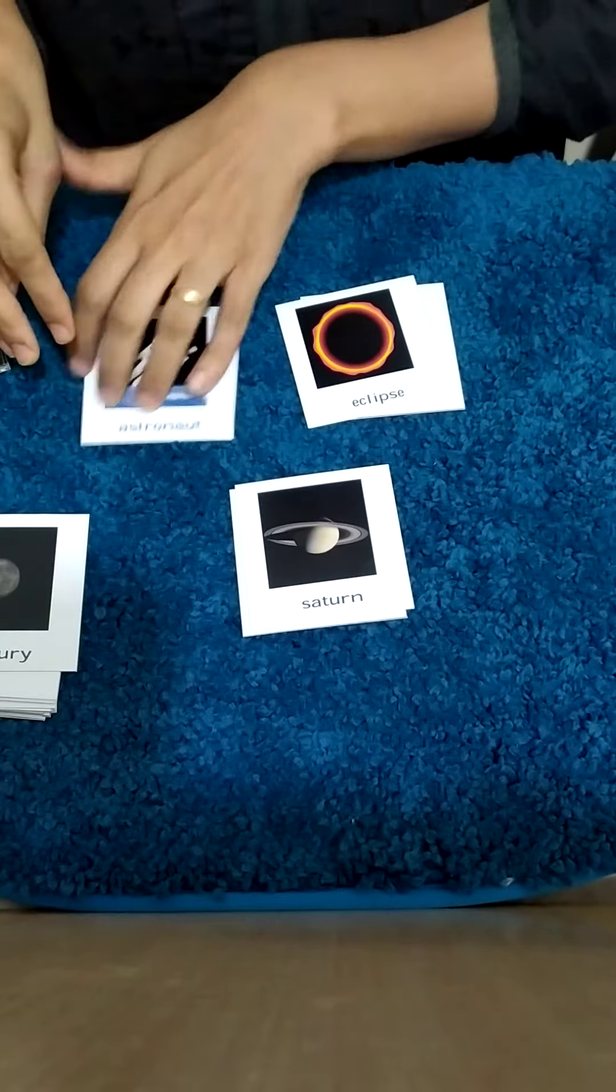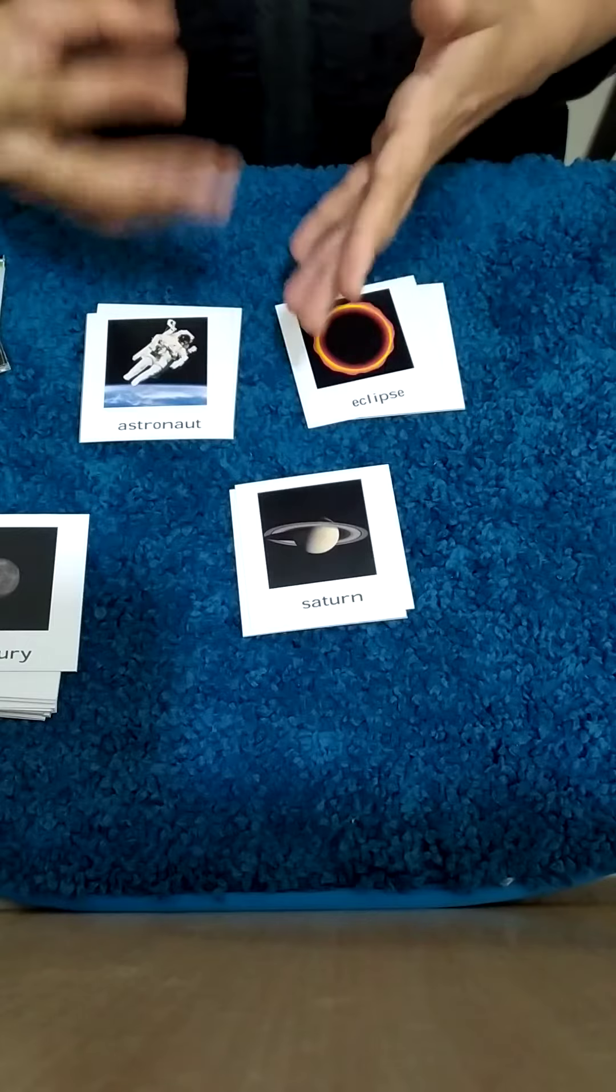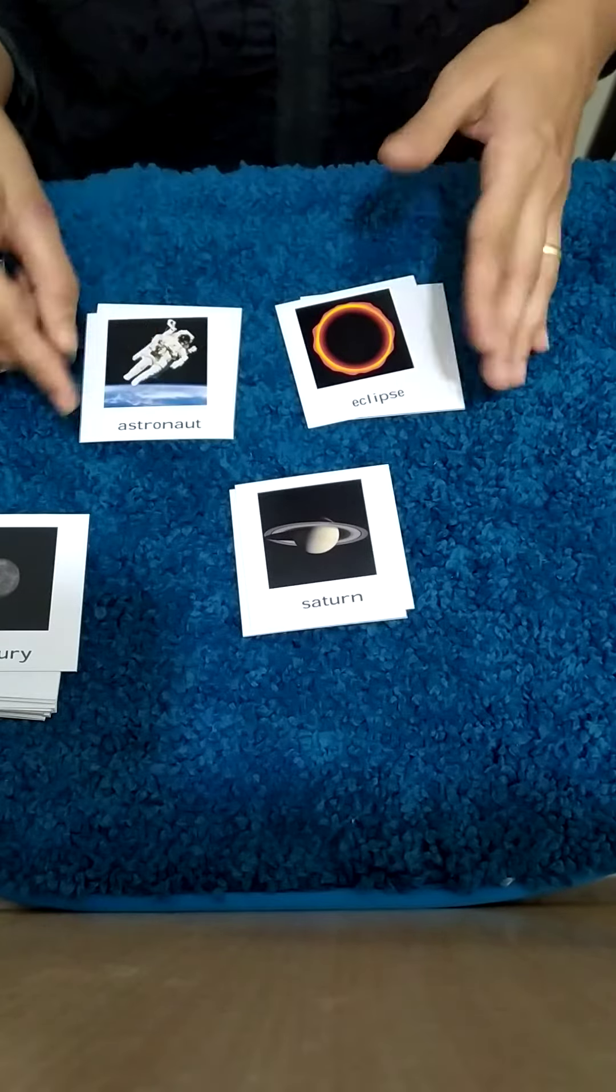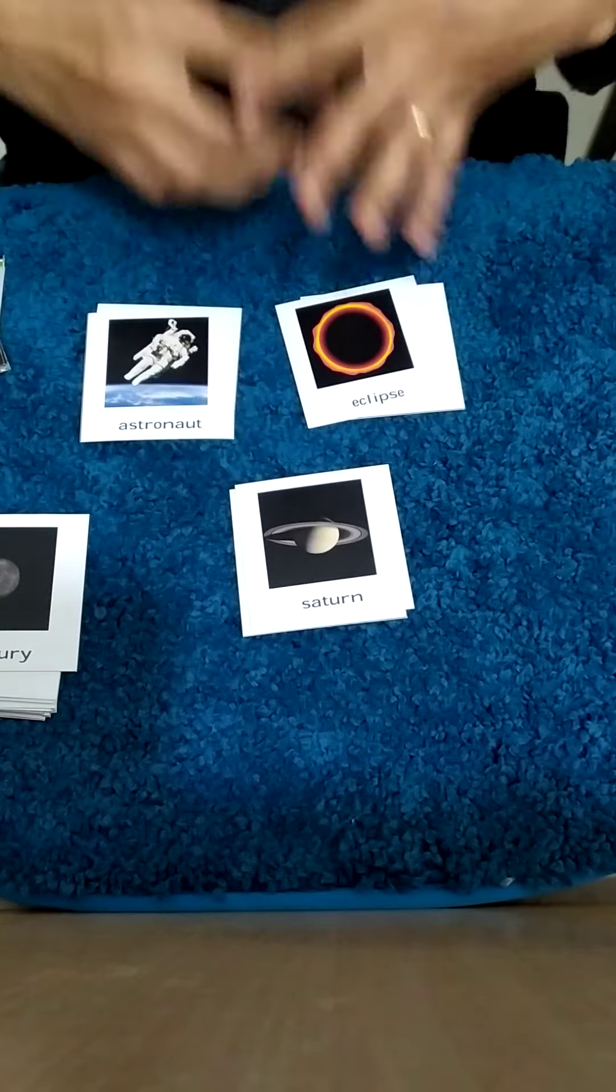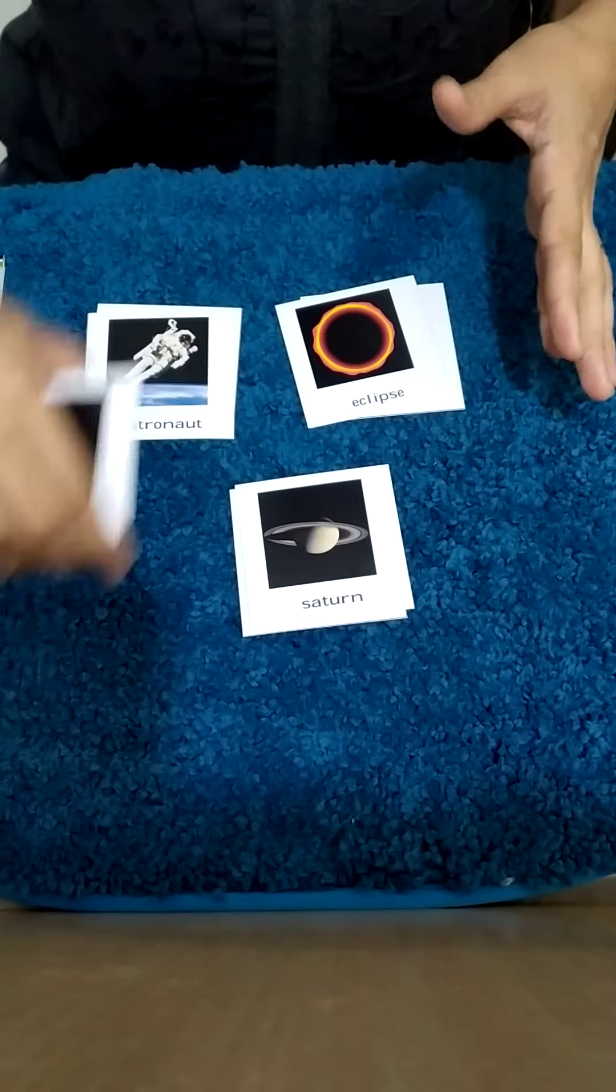Once they've learned this, then they start learning the names later. So you can tell them the astronaut, ellipse, Saturn, and at a later stage when they even start reading, can they read the cards and even write it at an earlier stage. So there's three or four different ways that you can use this activity.